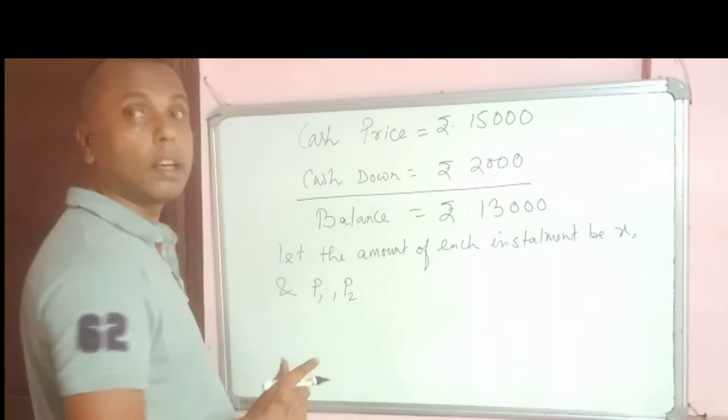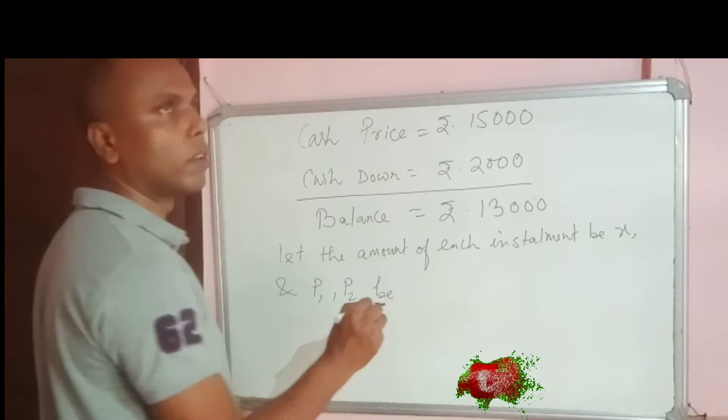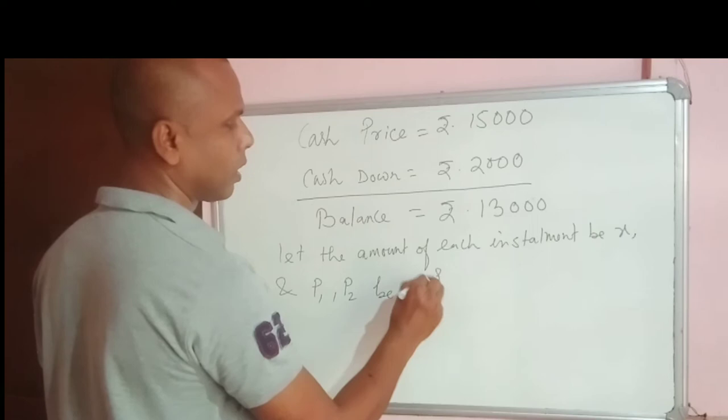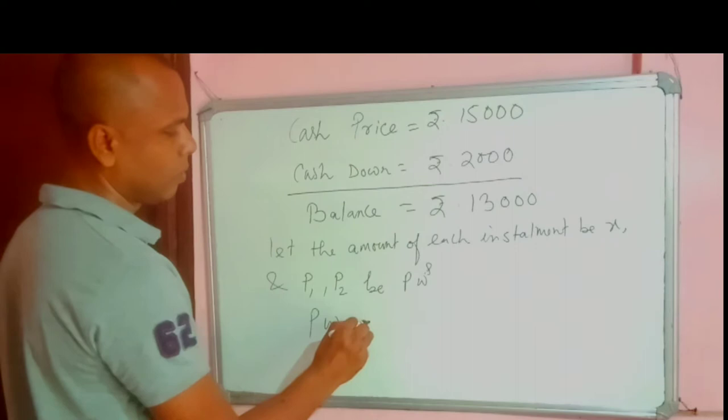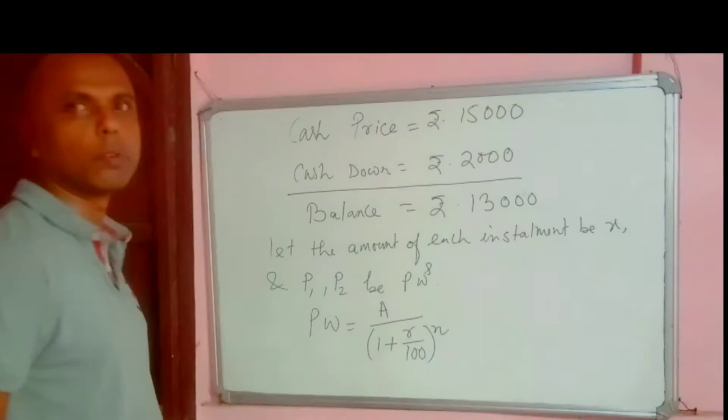So P1, P2 be the present value or present worth for the first year and second year. In short form we can write PWS. According to the formula, PW equal to A by 1 plus R by 100 all to the power N. Then we shall use the same formula to avoid confusion.